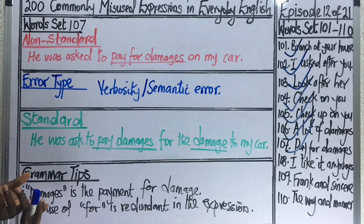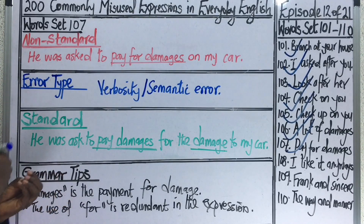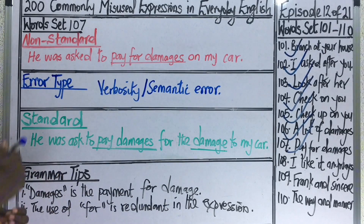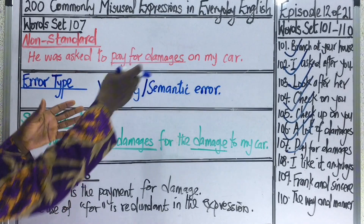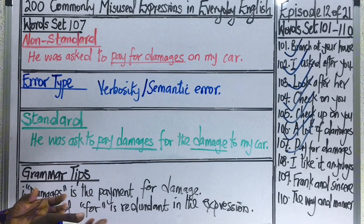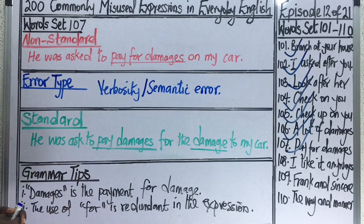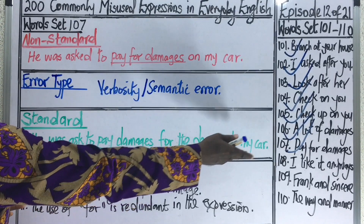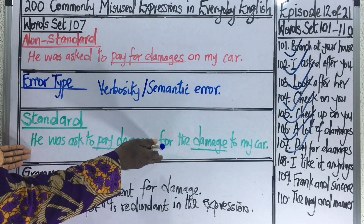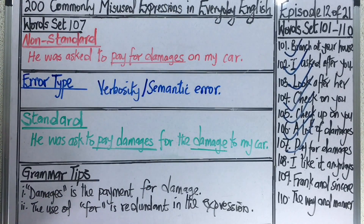This also contrasts what we discussed in word set 106. Damage without S is a non-count noun meaning injury, loss, or destruction to a property. Damages with S is a noun meaning the payment or compensation made for injury caused to someone. So instead of saying pay for damages on my car, you would say pay damages for the damage to my car.